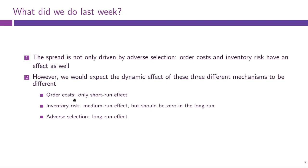In particular, order costs only have short-run effects, which are immediately reversed by future trades. Inventory risk generates medium-run effects because dealers accumulate their inventory but try to unwind it. They try to neutralize their position but it might take some time. So the long-run effect of inventory risk should be zero, but in the medium run it may always be present. Adverse selection has a permanent effect on prices: whenever some information about the fundamental value of the asset is revealed to the market, it is incorporated in all future prices.